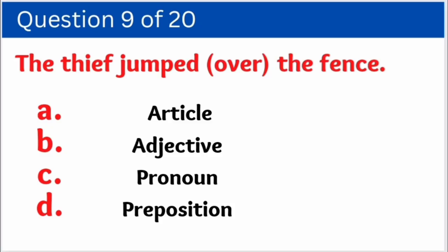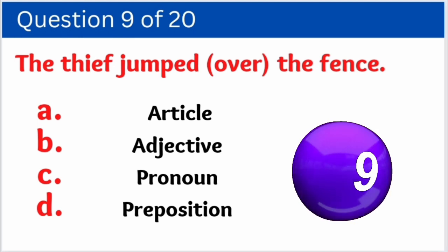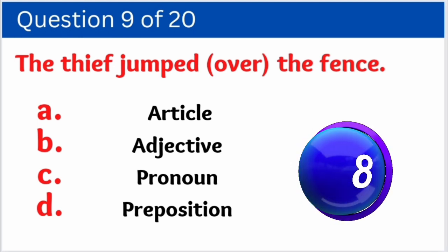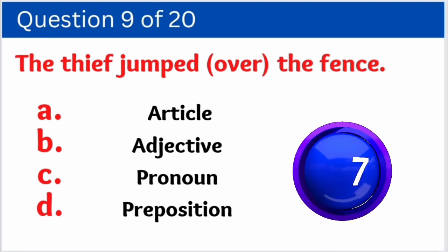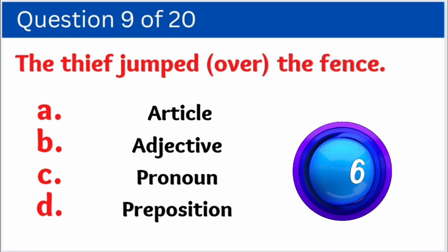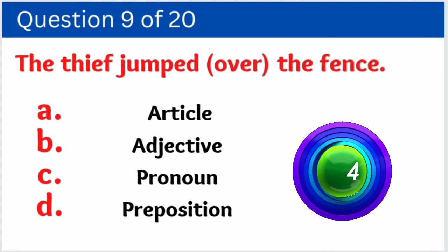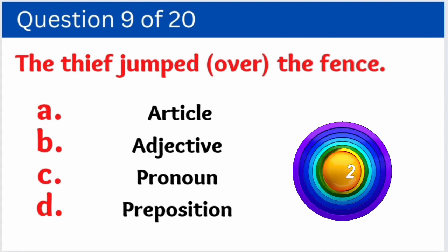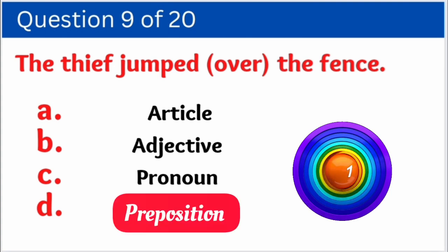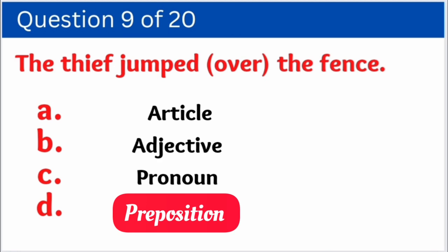Question number nine: 'The thief jumped over the fence.' Options are: A. Article, B. Adjective, C. Pronoun, D. Preposition. And the right answer is — 'over' is used as preposition, option D.